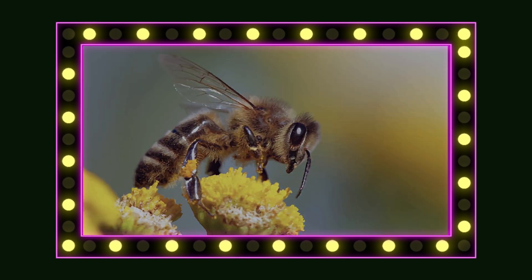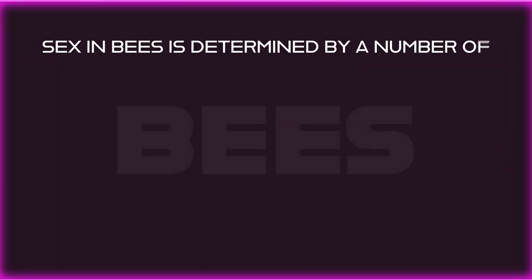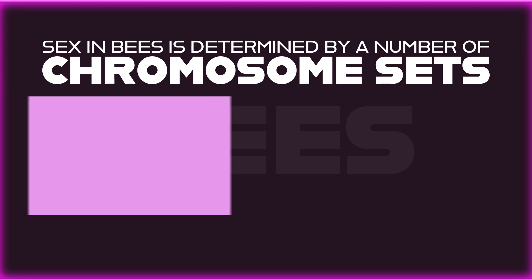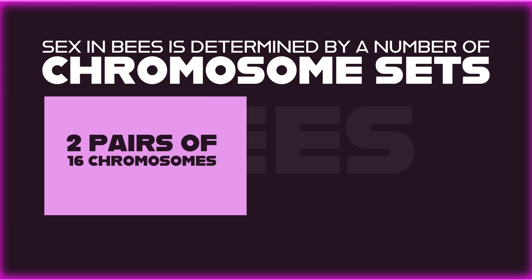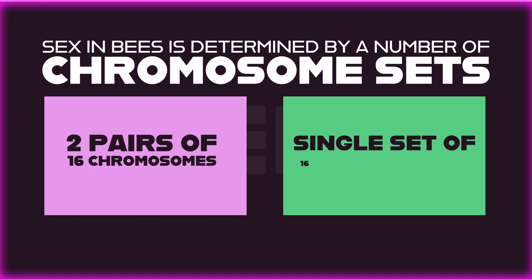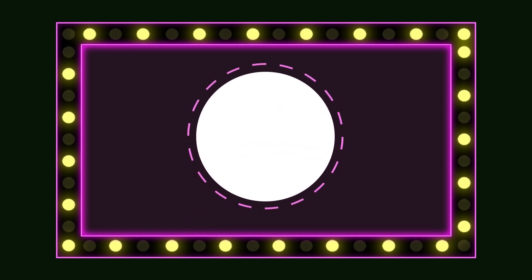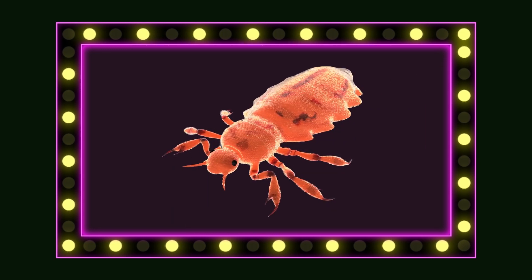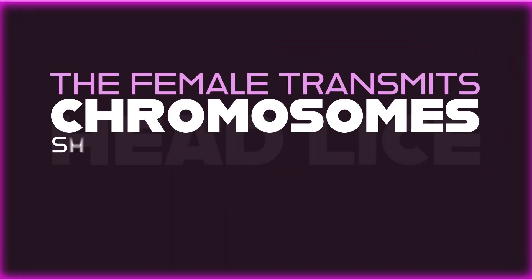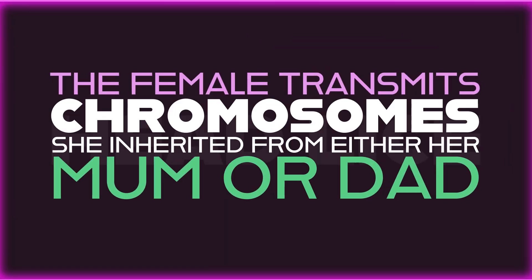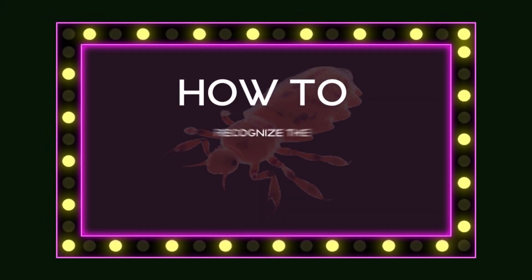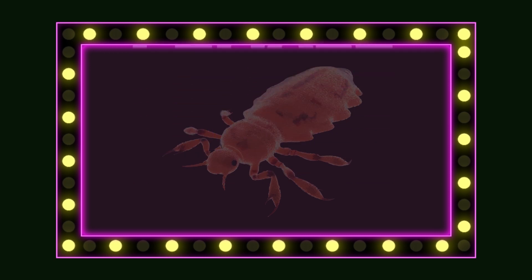Next we have bees. Sex in bees is determined by a number of chromosome sets, writes the doctor. Females have two pairs of 16 chromosomes — 32 total — while males have a single set of 16 chromosomes. Males develop from unfertilized eggs, and their only genetic material is derived from their mother. How to recognize the female? She makes large gametes. Now for head lice — annoying buggers. The female transmits chromosomes she inherited from either her mom or dad. The male only transmits chromosomes he inherited from his mom. How to recognize the female? She makes large gametes.